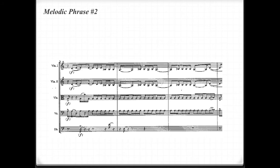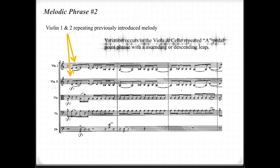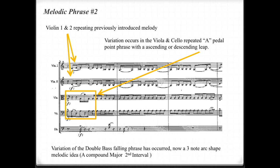Melodic phrase number two. Violin 1 and 2 are repeating the previously introduced melody. A variation occurs in the viola and cello repeated A pedal point phrase, with an ascending or descending leap. The double bass falling phrase has varied — it's now a three-note, arc-shaped melodic idea, or a compound major second interval. Putting the word compound in front of an interval means the interval is greater than an octave, so a compound major second is the same as a major ninth interval. If you need more clarification, write this down and we can answer it in our class discussion.